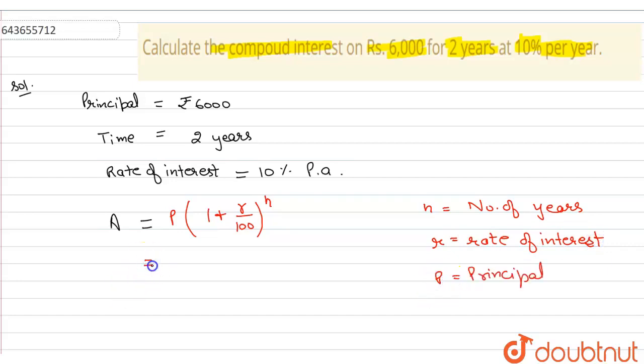After putting values, we get a is equal to 6000 bracket 1 plus the rate of interest in this sum is 10% per annum. So, 10 upon 100 and number of years is 2.